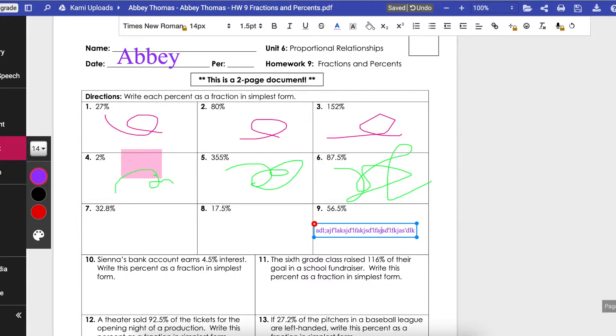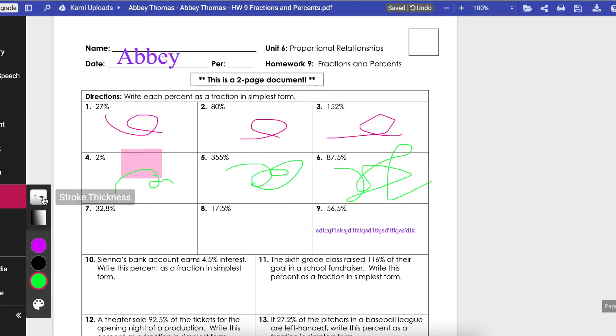If you need to circle something or draw a line from one thing to another you can click on Drawing, choose your color, choose the thickness and then you can draw what you need to draw.